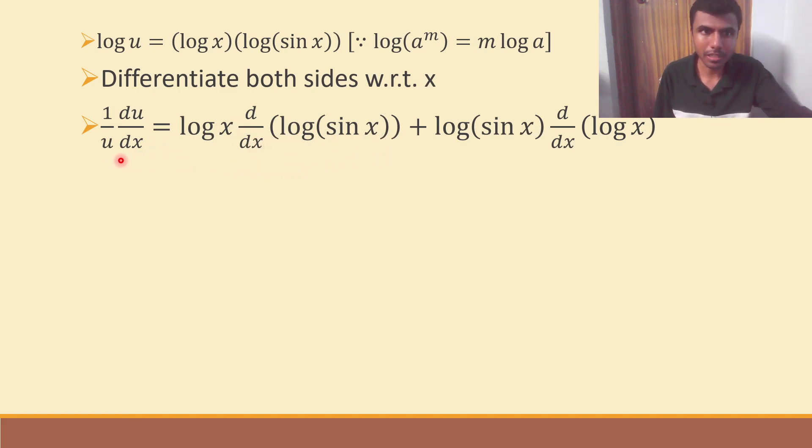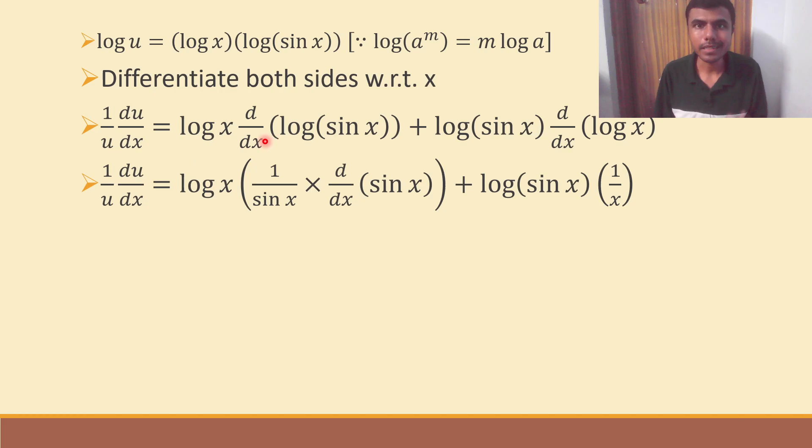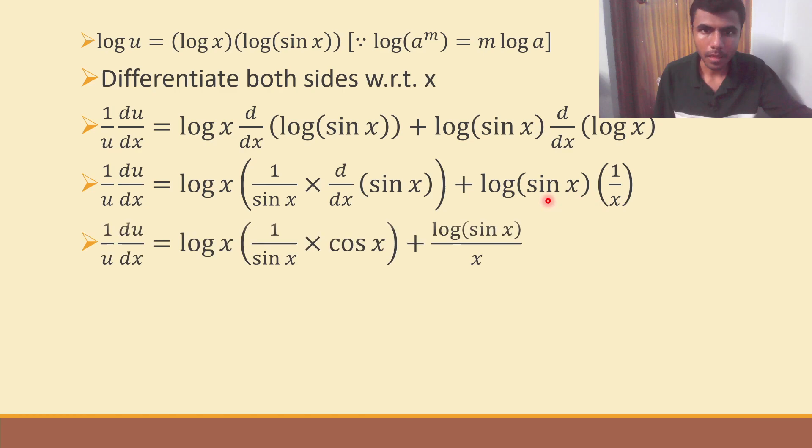So, simplification is only left. So, 1 by u du by dx is log x times derivative of log of sine x. Now, see, be a little careful here and listen to me. Derivative of log x is 1 by x. Now, derivative of log of sine x is 1 by sine x. But, as per chain rule, derivative of sine x will also come, which is cos x.